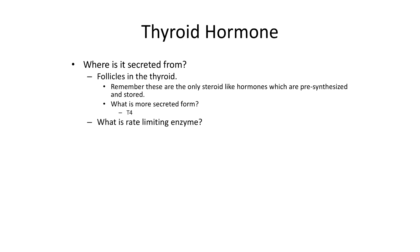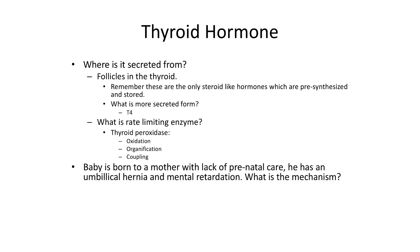The more secreted form is T4. The rate-limiting enzyme is thyroid peroxidase, which is important for the oxidation, organification, and coupling of thyroid hormone.